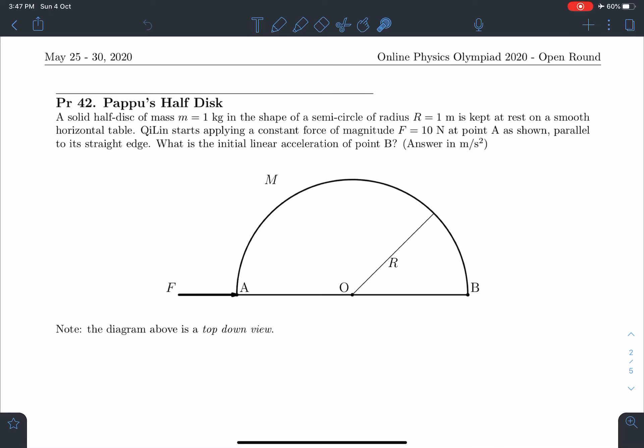Let's read the statement of this problem. A solid half disk of mass m in the shape of a semicircle of radius R is kept at rest on a smooth horizontal table. Quillen starts applying a constant force of magnitude F at point A as shown, parallel to its straight edge. What is the initial linear acceleration of point B? We have to answer this in meters per second squared. All values are given.